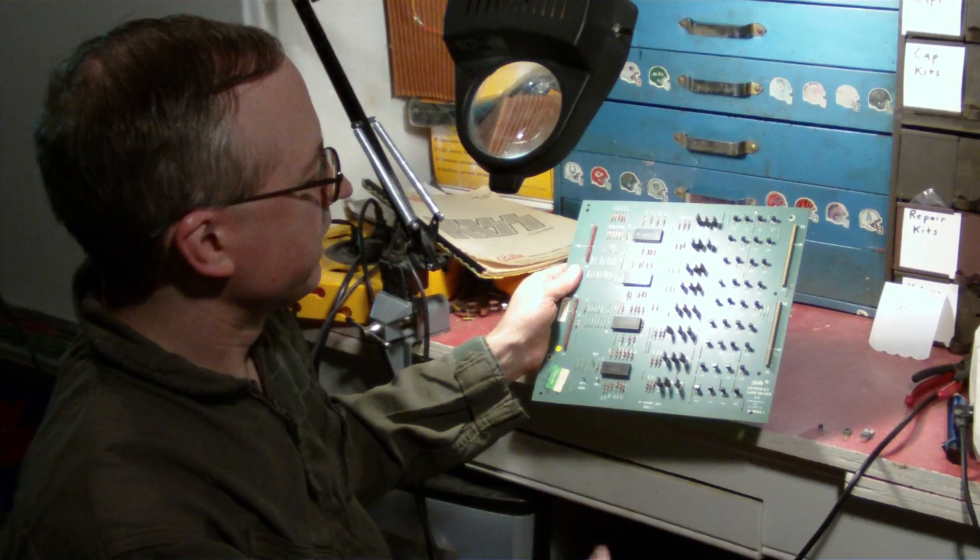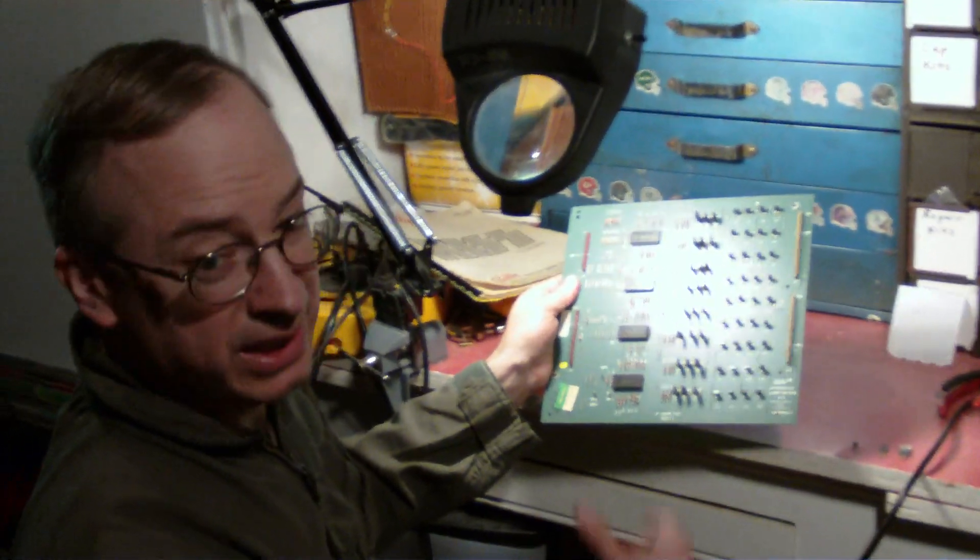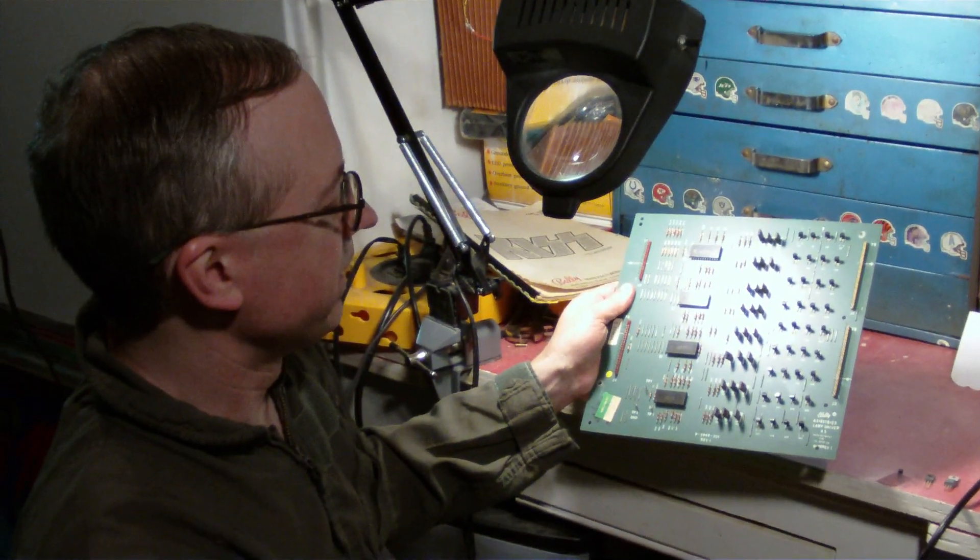Now in this case we have two transistors that are down, and we cheat. We use a Bally tester to test these boards out and find the transistors that are bad.